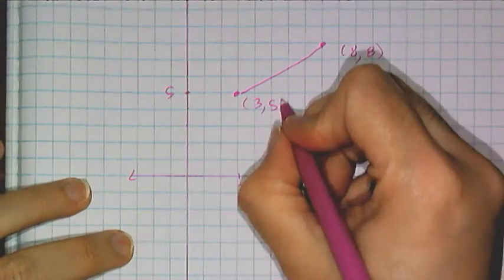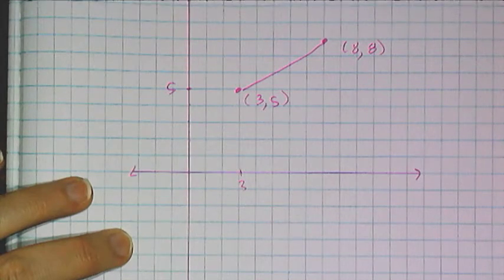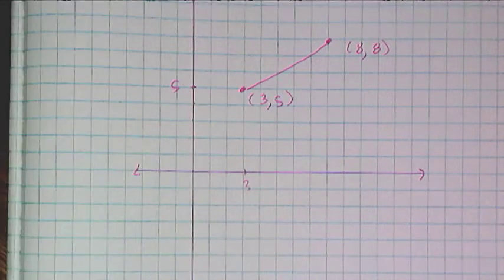And so if I want to find the distance between three, five and eight, eight, I can't count like spaces, that's not going to work.